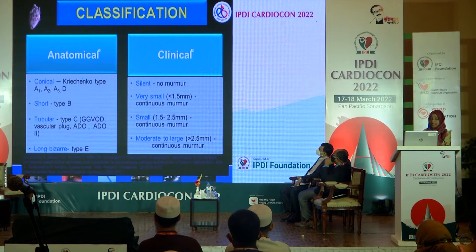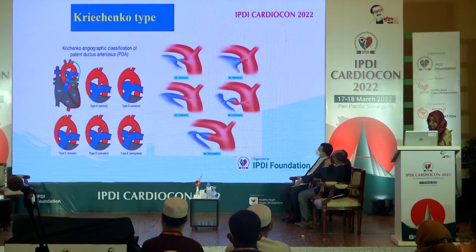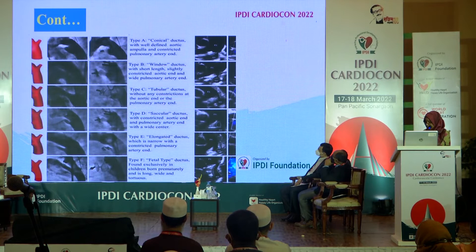Coming to the anatomical classification of Krichenko, our type is the tubular type C, and clinically this is the large variety. In this picture you can see the type C tubular PDA — these are almost like another vessel, you cannot close them easily. Here you see the tubular PDA with a double-disc device, which is a very good device for closing this kind of PDA.